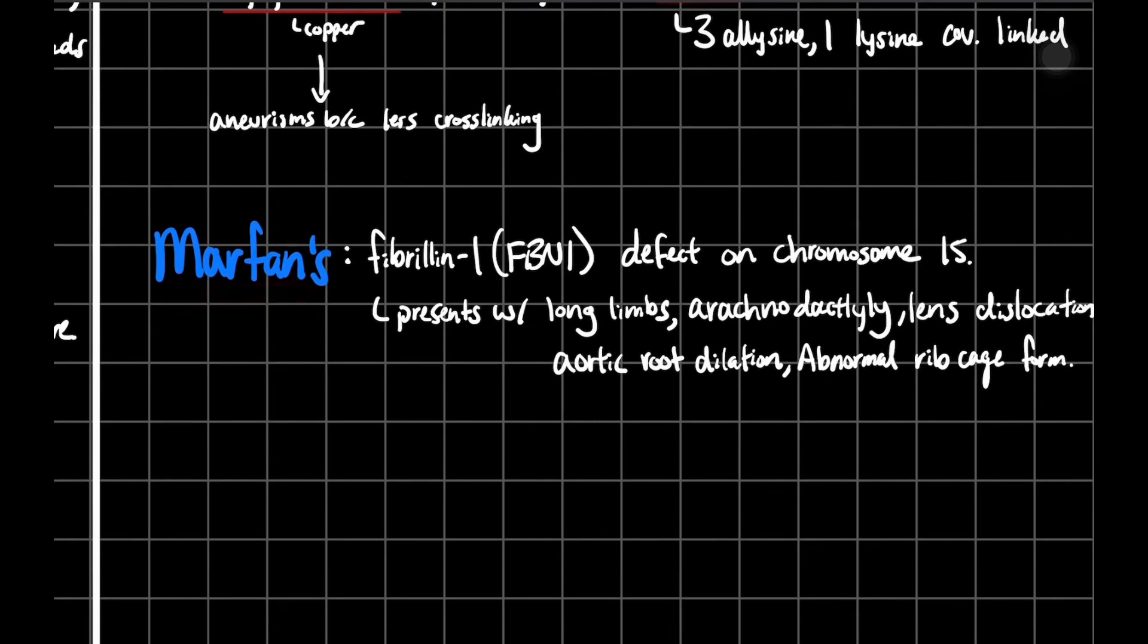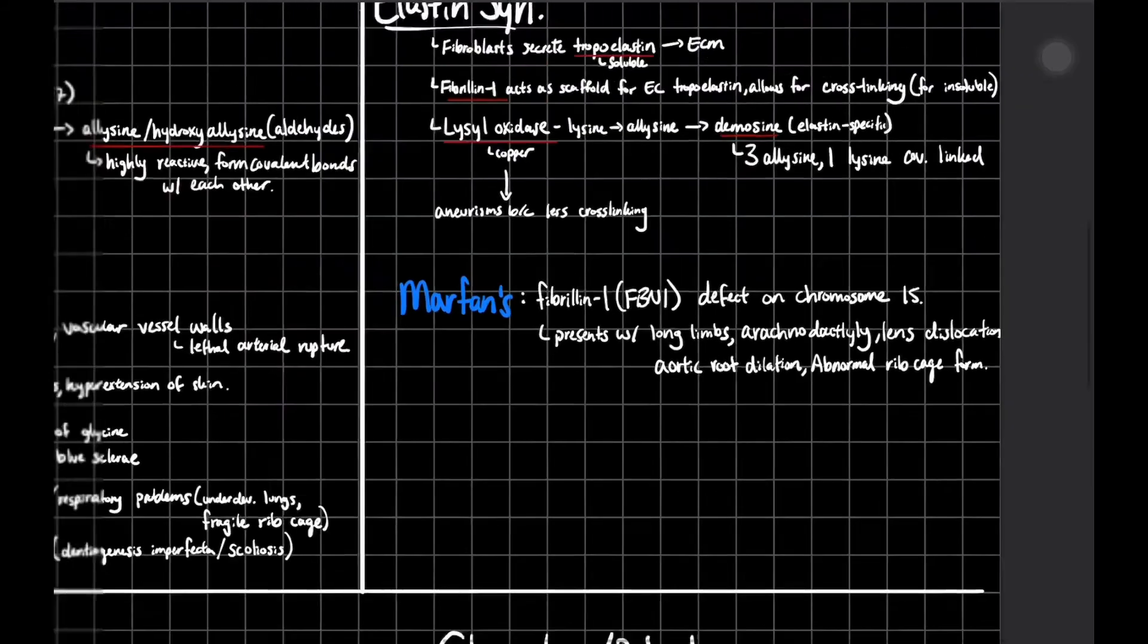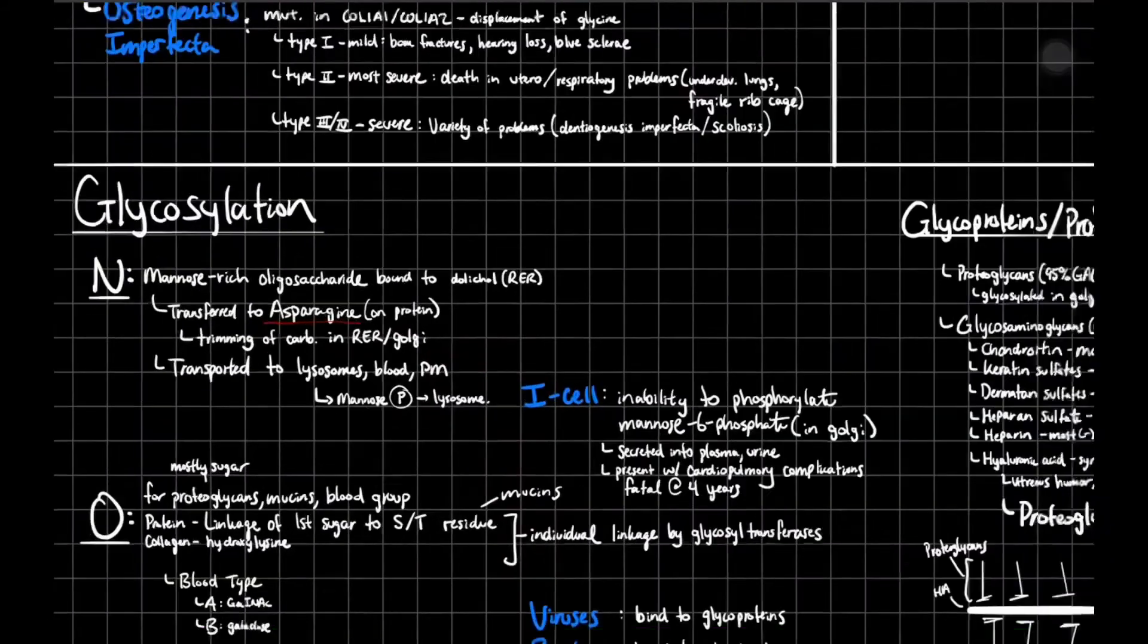One of the diseases that presents with this is Marfan's. That's going to be a defect in your fibrillin 1 or your FBN1 gene on your chromosome 15. It's going to present with long limbs and all of these different symptoms. You can read that yourself.